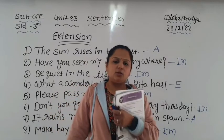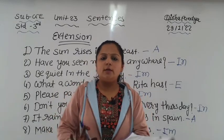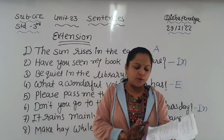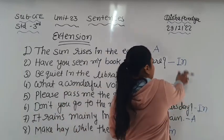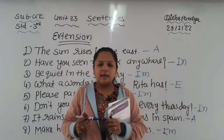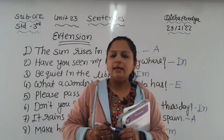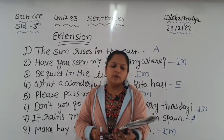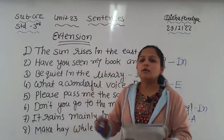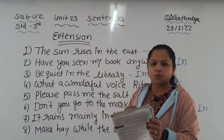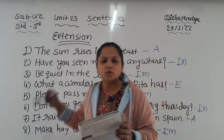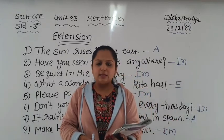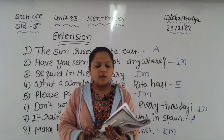Sentence seven: 'It rains mainly in the plains in Spain.' - This is a normal positive statement - so it is assertive - write A. Sentence eight: 'Make hay while the sun shines.' - An order is given - so it is imperative - write IM. So our extension exercise is also completed. Write the exercise in your GE book - write only letters, not words. Today's homework is to complete your GE term book. See you in the next class - till then stay home, stay safe, have a nice day!